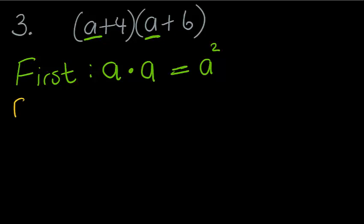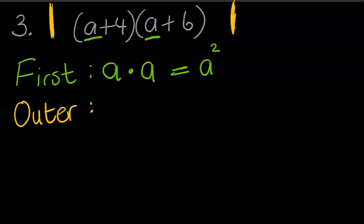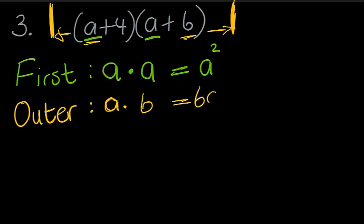The O in FOIL stands for Outer. In these two brackets, I have an outer side. The term closest to the outside in the first bracket is a. I multiply a with the term closest to the outside on the second bracket, which is 6. So a times 6 gives me 6a.